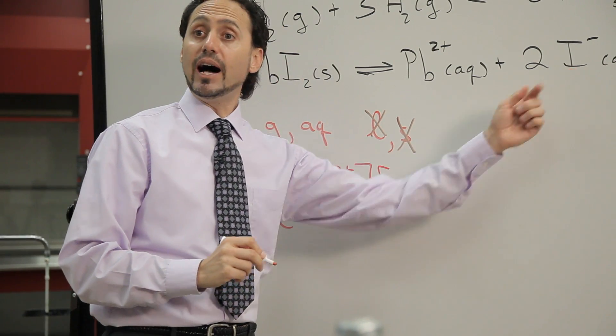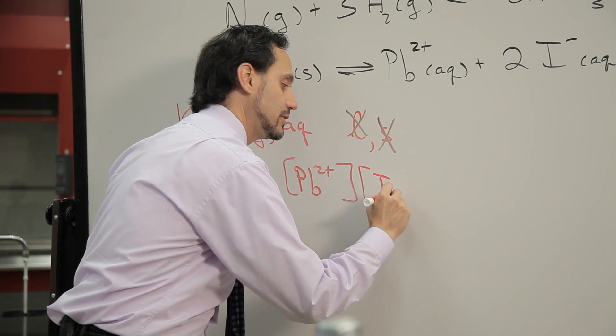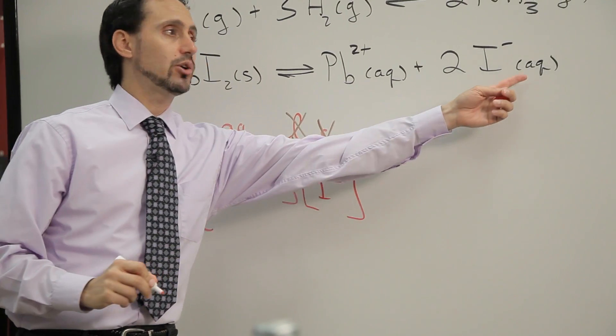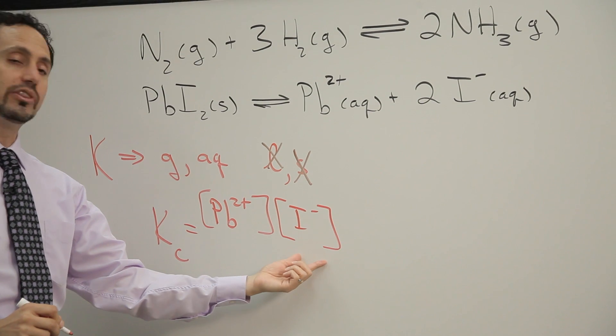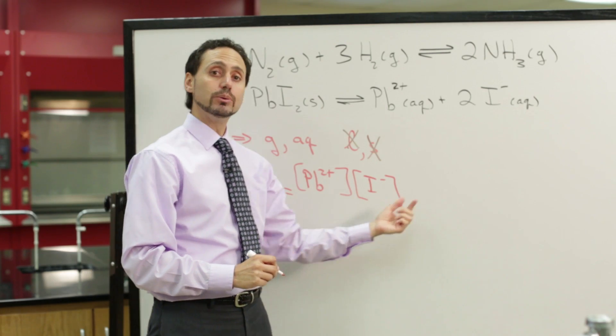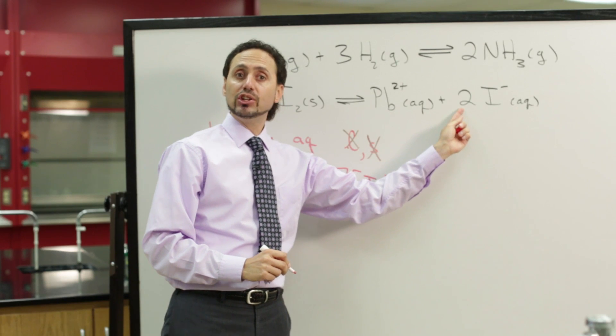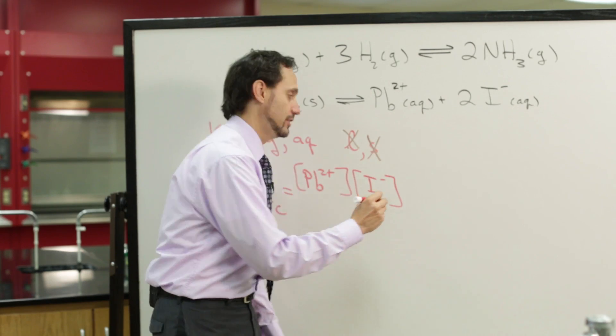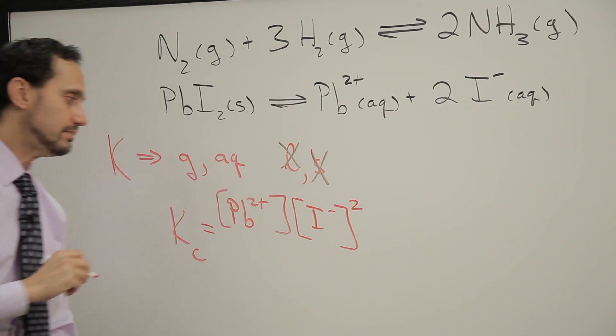We also have the iodide ion, I minus, also in the aqueous phase, so it's okay to include that. But we have to remember that in the equilibrium constant expression, we need to include the coefficient.